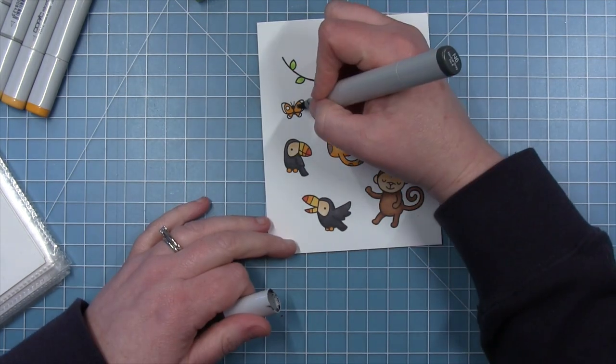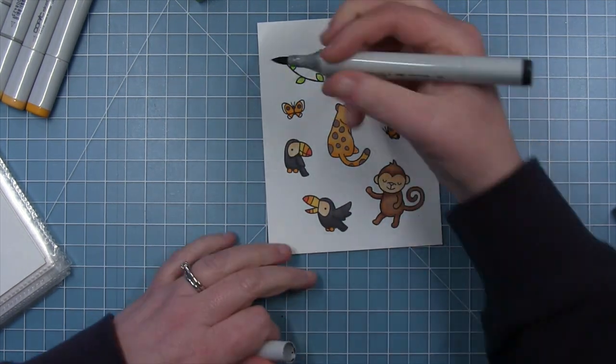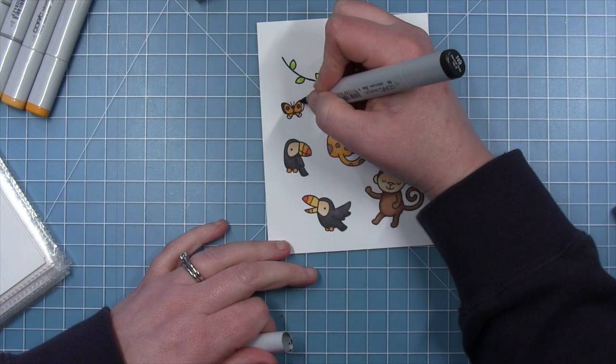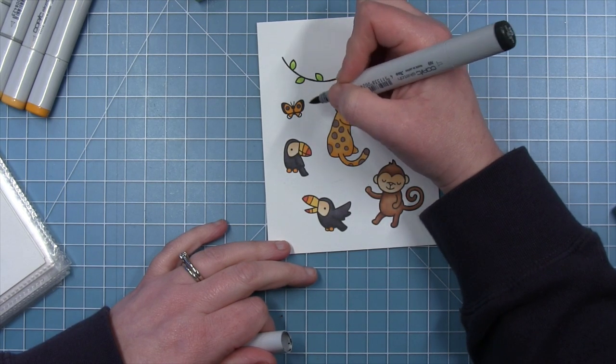So I'm using that darker gray for the tips of the butterfly wings, and then the N6, the slightly lighter one, for the circles.